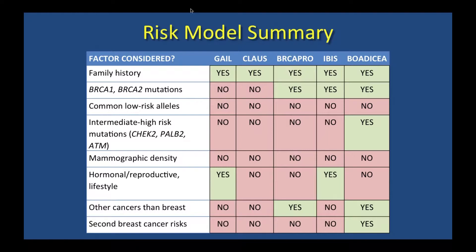There are a number of different computer models used to estimate a person's risk, including Gail, Claus, BRCAPro, Ibis, and Tyrer-Cuzick. These can be found online. They all consider family history; some consider genetic mutations, hormonal factors, or mammographic density. These tools allow us to estimate risk and guide screening and prevention decisions even when we don't have a genetic answer.